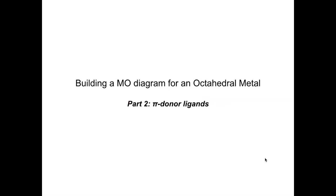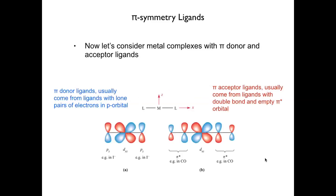If you haven't already, please go back and watch the video on how to build a molecular orbital diagram when we only consider sigma donor ligands. We need to remember we have three types of ligands that we classify by how they bond to a metal: sigma donating, pi donating, and pi accepting.